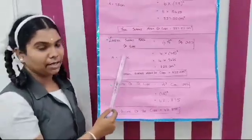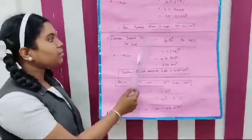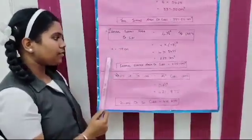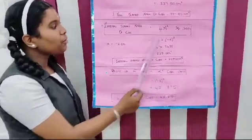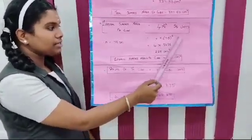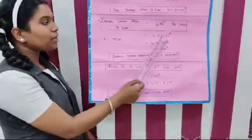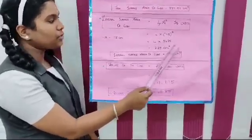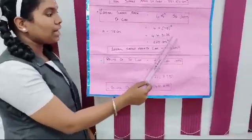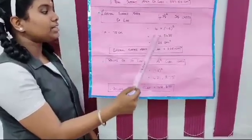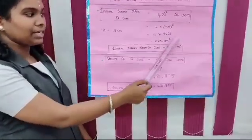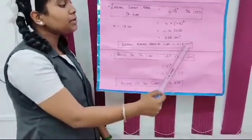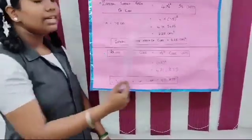Next, we calculate lateral surface area of a cube. Lateral surface area of a cube is equal to 4A² square units. Here, A is equal to 7.5 cm. So: 4 × (7.5)² = 4 × 56.25. By multiplying these two values, we get 225 cm². Lateral surface area of the cube is equal to 225 cm².